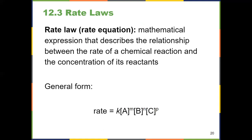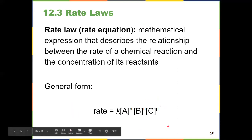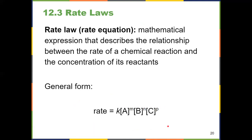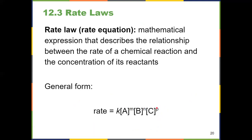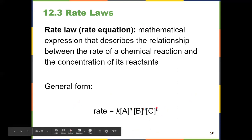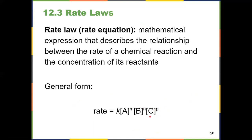There is one situation where a reactant might not appear in the rate law, and that's if it's what's known as zero order. Anything raised to the power of zero is one, and anything multiplied by one is itself, so it would drop out. So if P had a value of zero — zero order — C to the zero would be one, so that whole term would drop out of the equation. That's kind of an exception, not the norm.